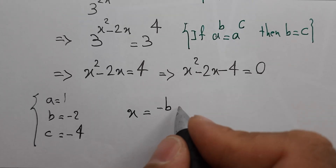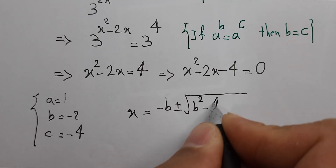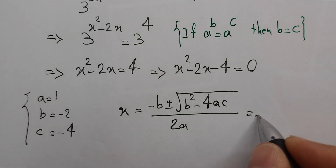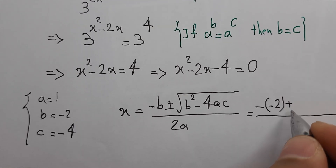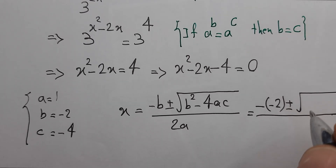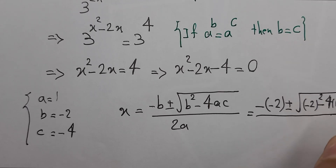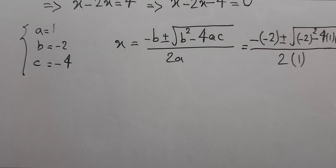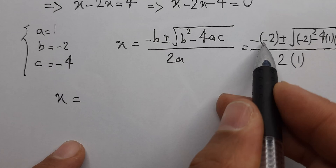x equals negative b plus or minus square root of b squared minus 4ac, over 2a. Here that equals: negative b is negative 2, plus or minus square root of negative 2 squared minus 4 times a which is 1 times c which is negative 4, over 2 times a which is 1.